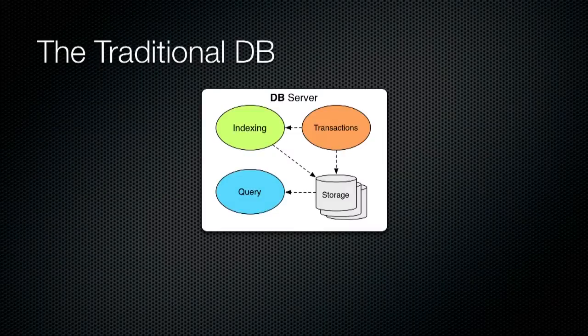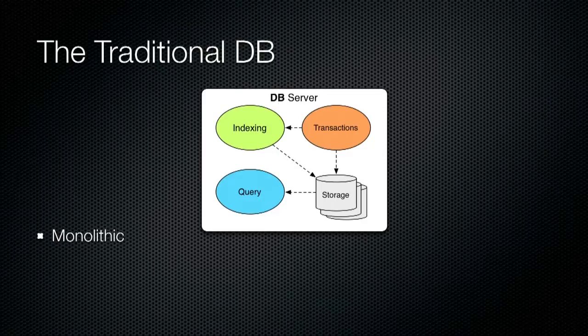We know what traditional databases look like. They're these boxes. They do all kinds of stuff — transaction processing, indexing the results of transactions, processing queries, handling requests from users, and managing storage. This is a monolithic system, and it's difficult to scale. What are your choices? You can either take this box and inflate it — try to make one box bigger — and that will obviously burst like a balloon at some point. Or you can replicate it, make a lot of copies. But this box is a complex thing, and if you make a lot of copies of it, you end up with a lot of complex things, which is not what you want.